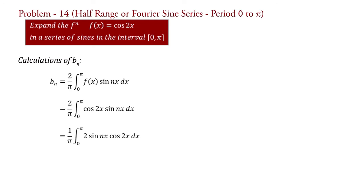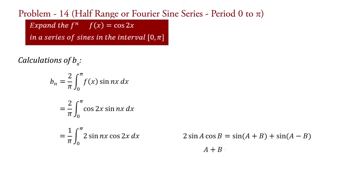Now, using the trigonometric relation 2 sin(A) cos(B) = sin(A+B) + sin(A−B). In our formula, a = nx and b = 2x. Therefore, a+b = nx + 2x = (n+2)x, and a−b = nx − 2x = (n−2)x.